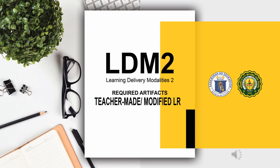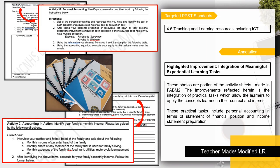The following are the samples of teacher-made or modified learning resources as a required artifact. The targeted PPST standard is 4.5 — Teaching and learning resources including ICT. In this artifact, I highlighted the improvement on the integration of meaningful experiential learning tasks. The photos are portions of the activity sheets I made in FABM 2. The improvements reflected include the integration of practical tasks which allow learners to apply concepts learned in their context and interest, such as personal accounting in terms of statement of financial position and income statement preparation.